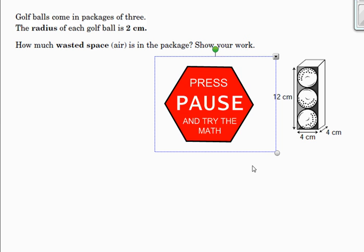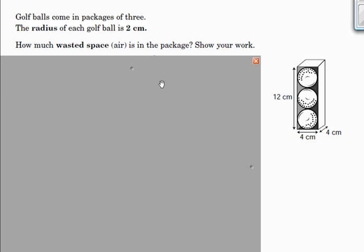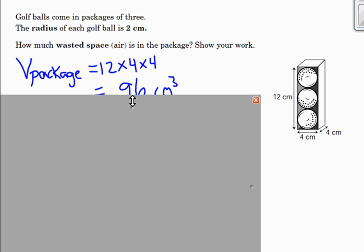So, running out of time on the video, so I want you to press pause, do whatever math you can, and I'll see you on the flip side. So a fairly straightforward question. Golf balls come in packages of 3, the radius of each golf ball is 2, and how much wasted space is there? So any space that is not taken up by a golf ball is considered wasted space. So the volume of the package, which is just a rectangular prism, 12 times 4 times 4, is 96 cubic centimeters.